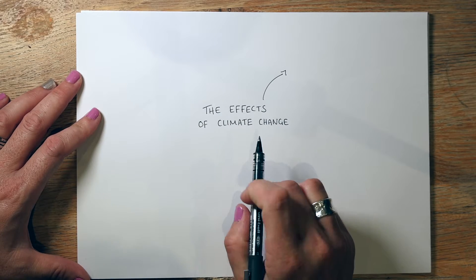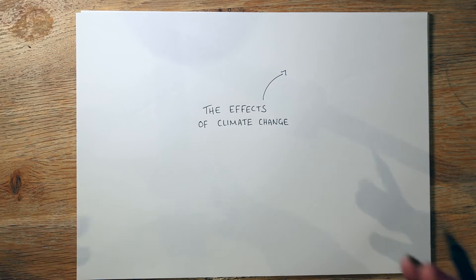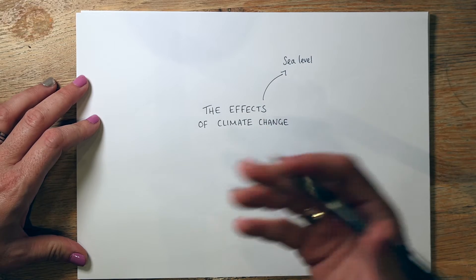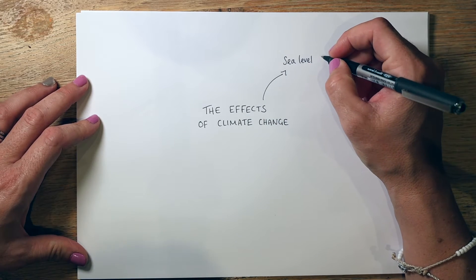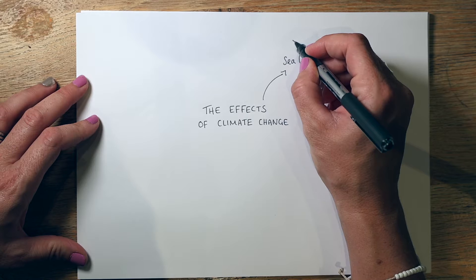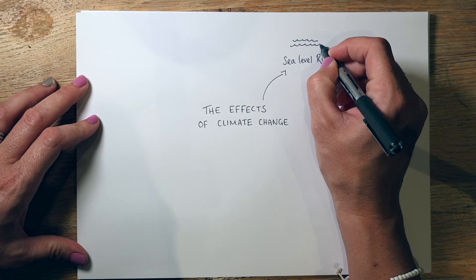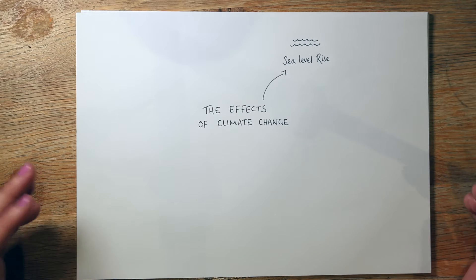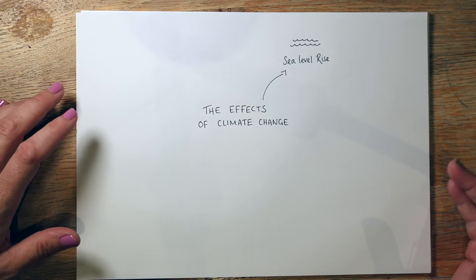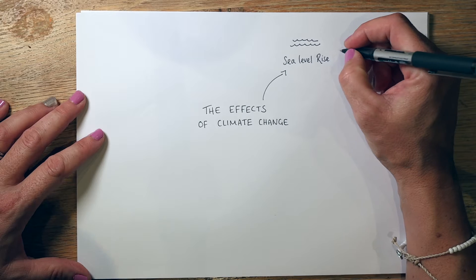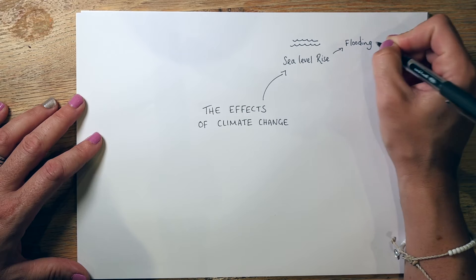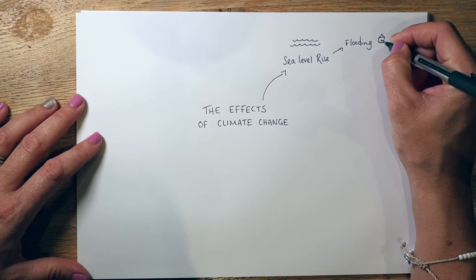When I think about the effects of climate change, the first thing I think about — apart from the planet heating up — is sea level rise. That's obviously due to increased temperatures and the melting of the Arctic and Antarctic ice sheets. Sea level rise is a really big issue. It's going to cause a lot of problems into the future, particularly for coastal communities. There are literally millions if not billions of people around the world affected by this. The main issue people will have is flooding — flooding of businesses, flooding of homes, flooding of schools.